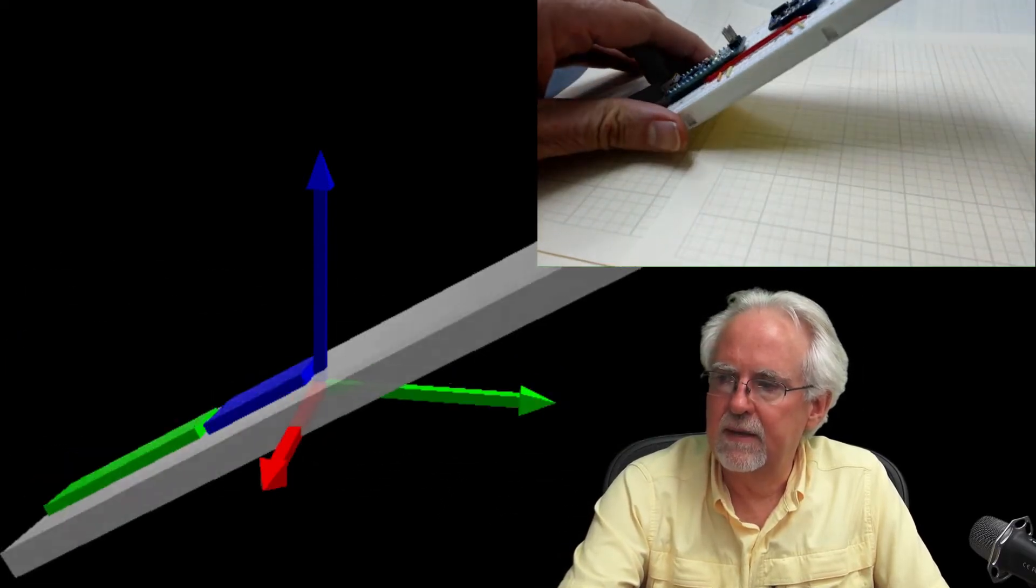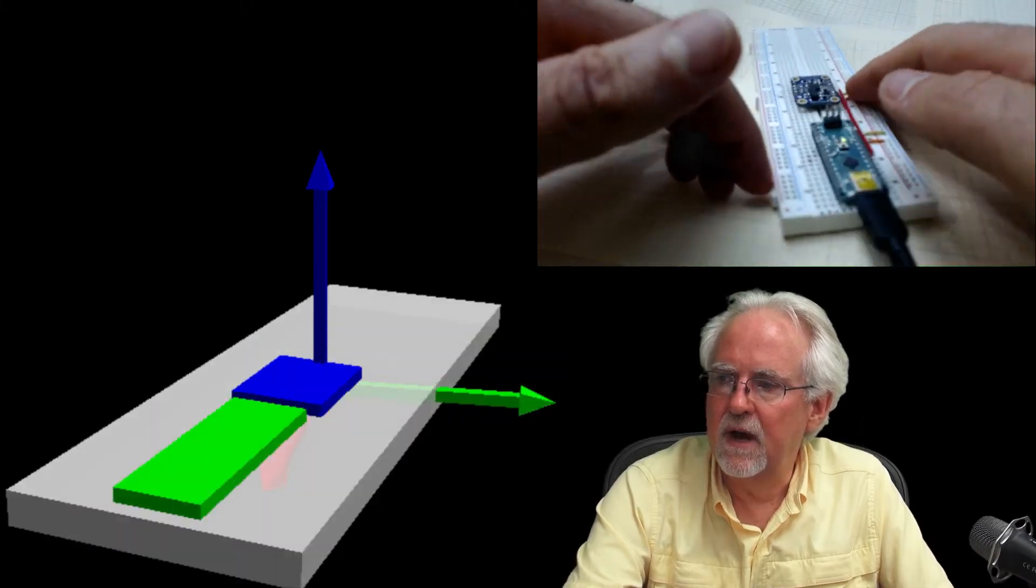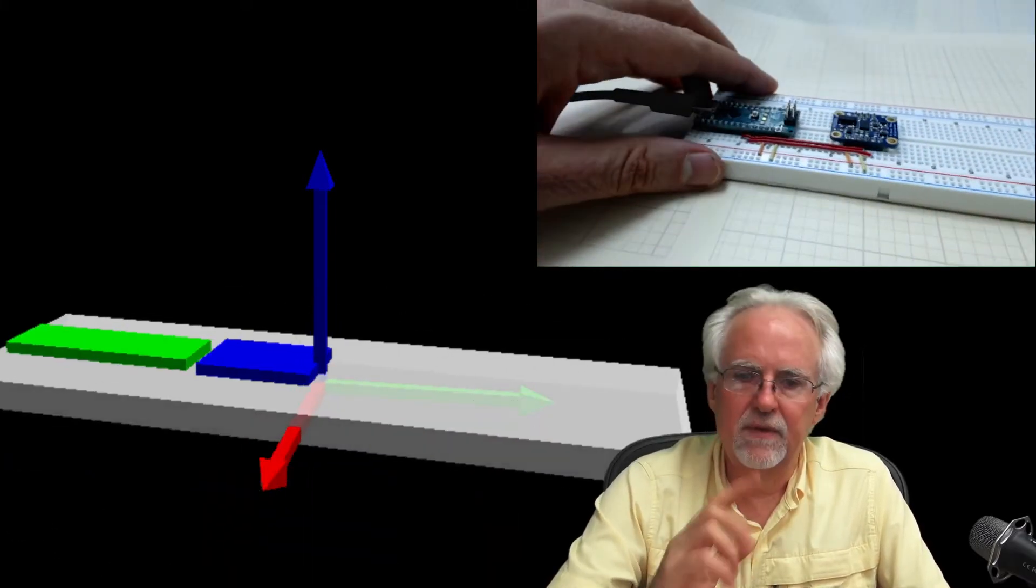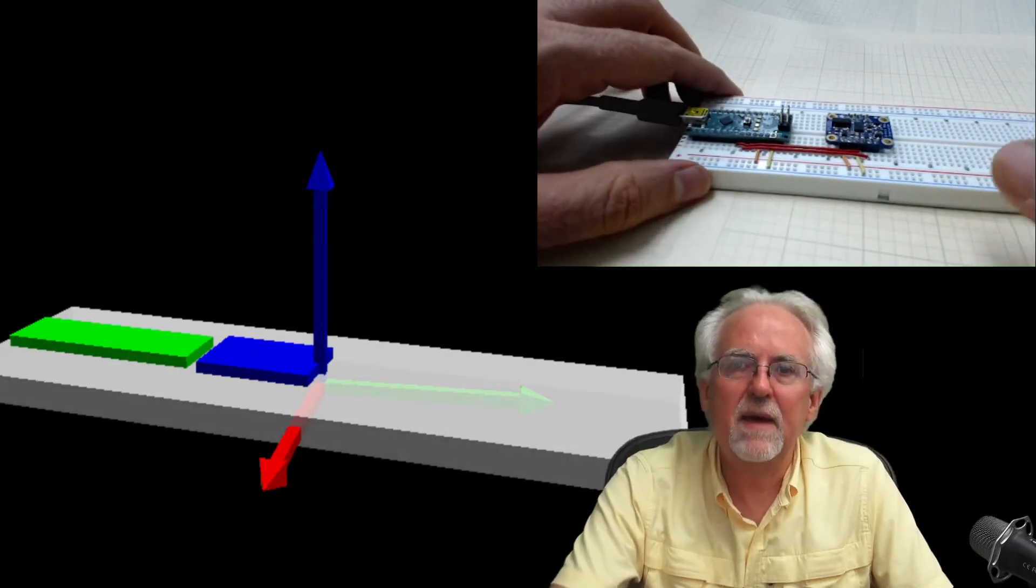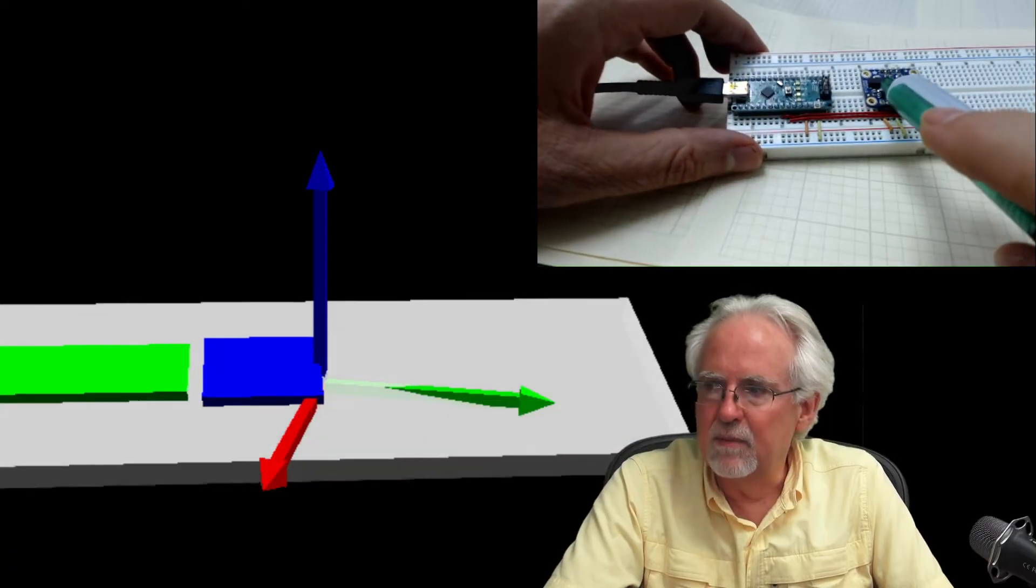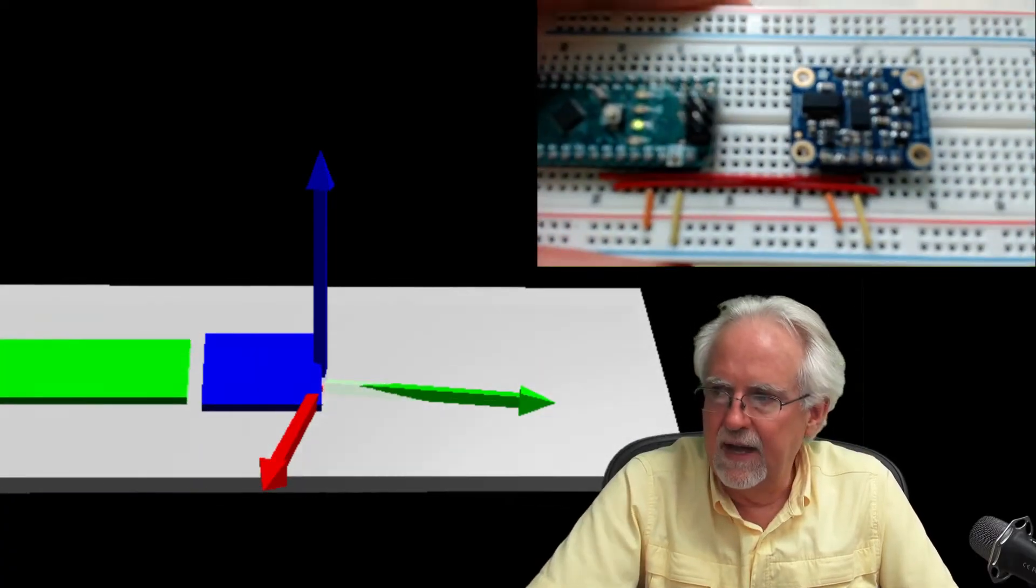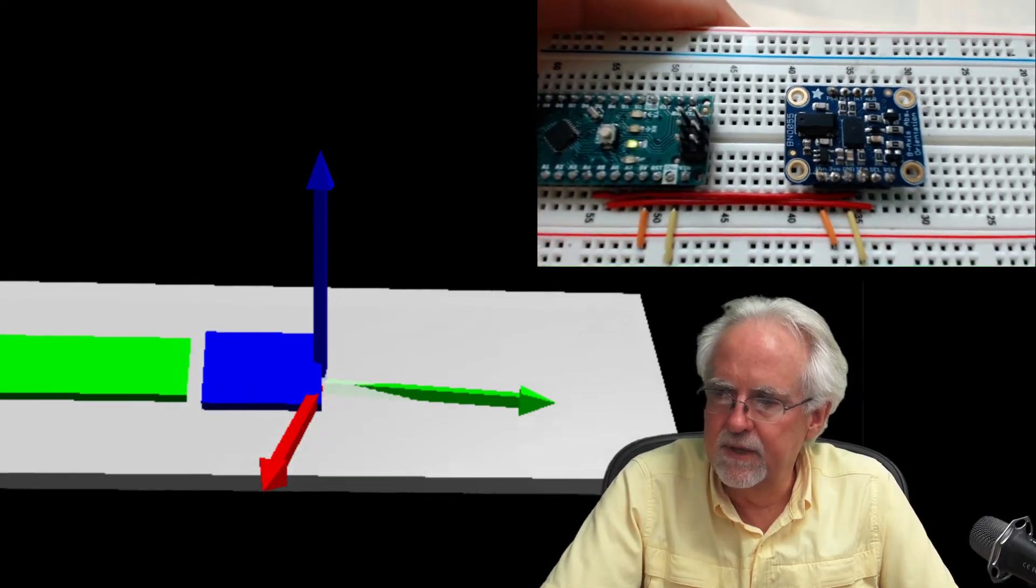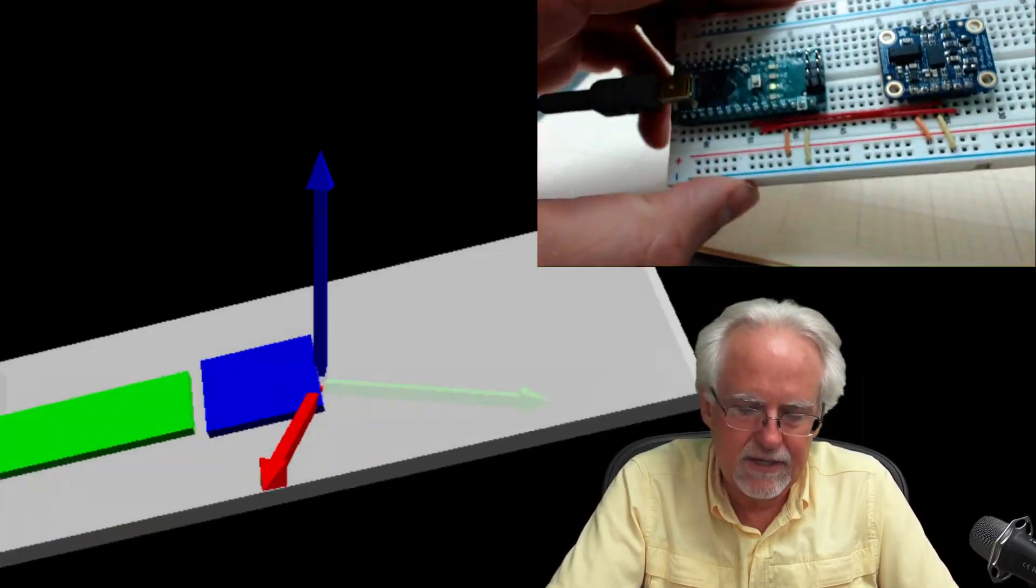And same thing. I can roll. I can pitch. I can yaw. And whatever this board does in the real world, the simulation does in the virtual world. Now, man, can you imagine how obsessive compulsive we could get and start putting the little, the little fine details. Let me see. OK. Yeah, that focus is pretty good. Start putting the little fine details in our simulation.